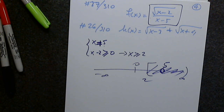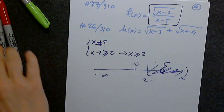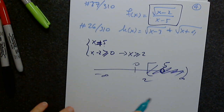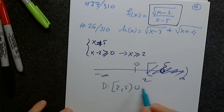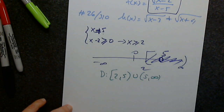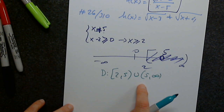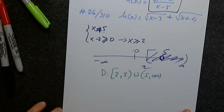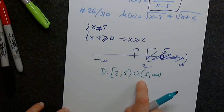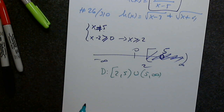We remove 5 because x cannot equal 5, so the domain is written as [2, 5) ∪ (5, ∞). With parentheses, 5 is not included — that is the definition of parentheses. The bracket means the endpoint is included; the parenthesis means it is not.